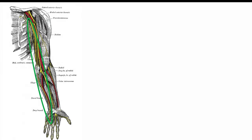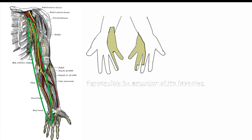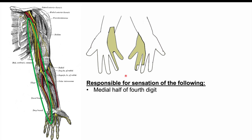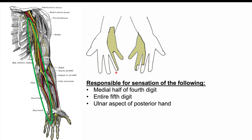The ulnar nerve originates from the neck and runs all the way down the arm, ending at the medial aspect of the hand. It is responsible for sensation of the medial half of the fourth digit — the half closer to the pinky — the fifth digit entirely, and the ulnar aspect of the posterior hand. This is in contrast to carpal tunnel syndrome, which involves sensation of the thumb, index finger, middle finger, and half of the ring finger.